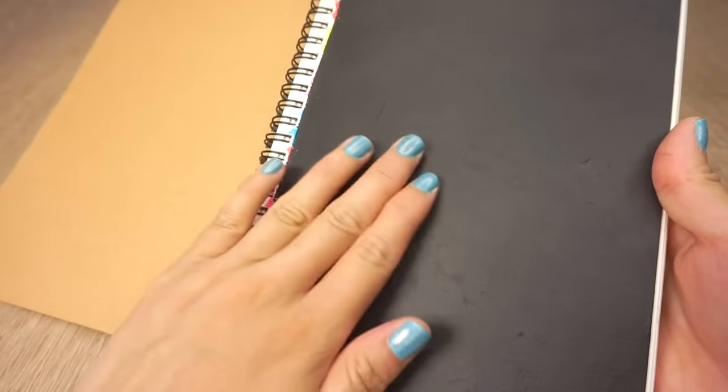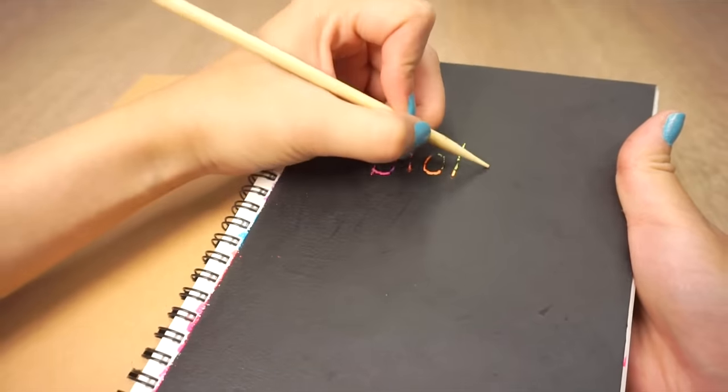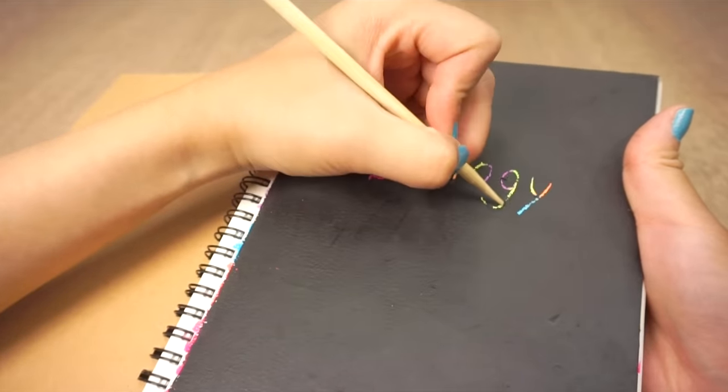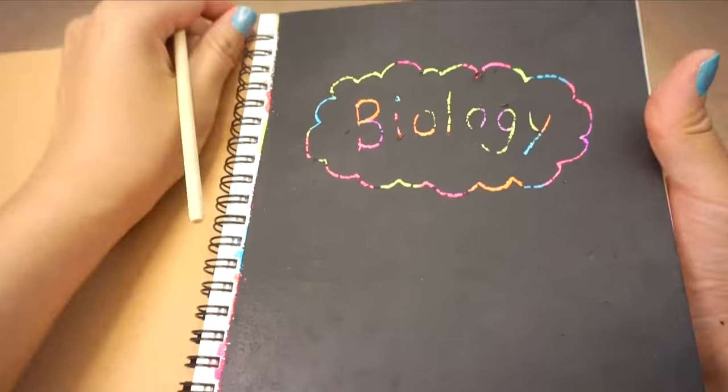And now your scratch off notepad is done. You can take any sharp object and start writing or drawing on it. One suggestion would be to create a cover page like this for your different subjects at school.